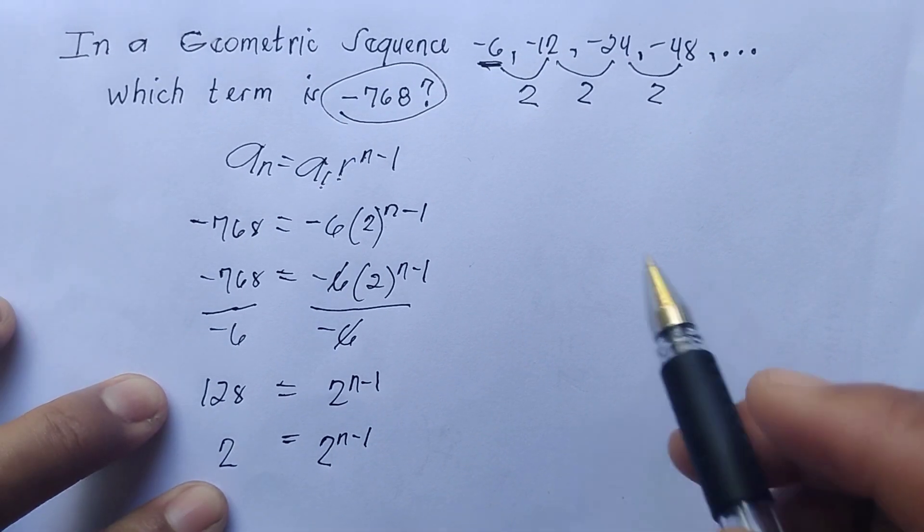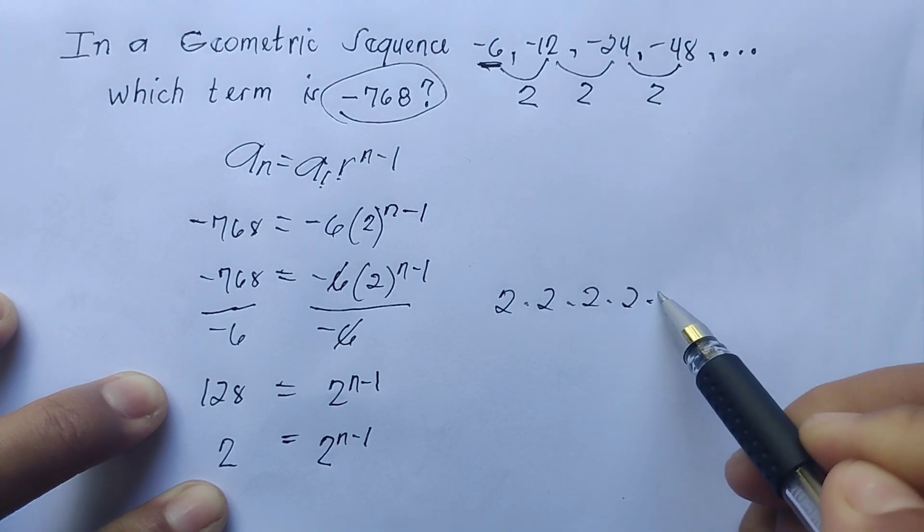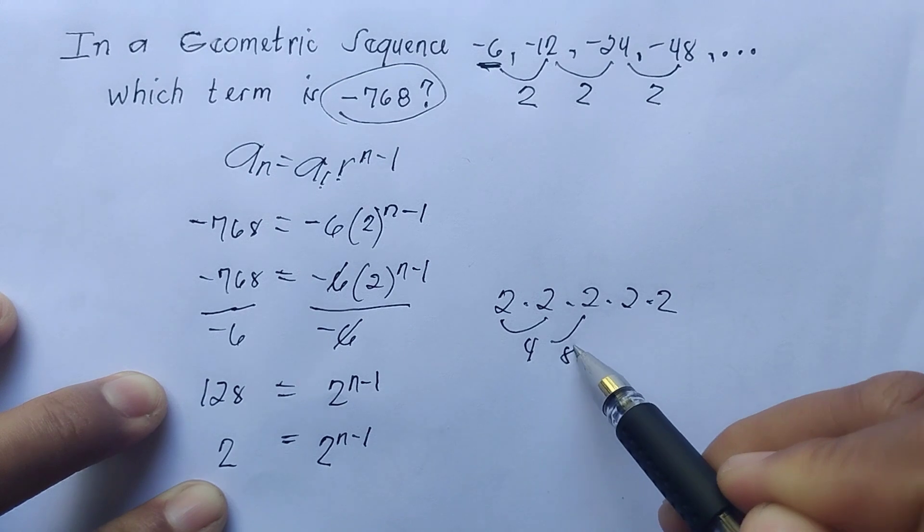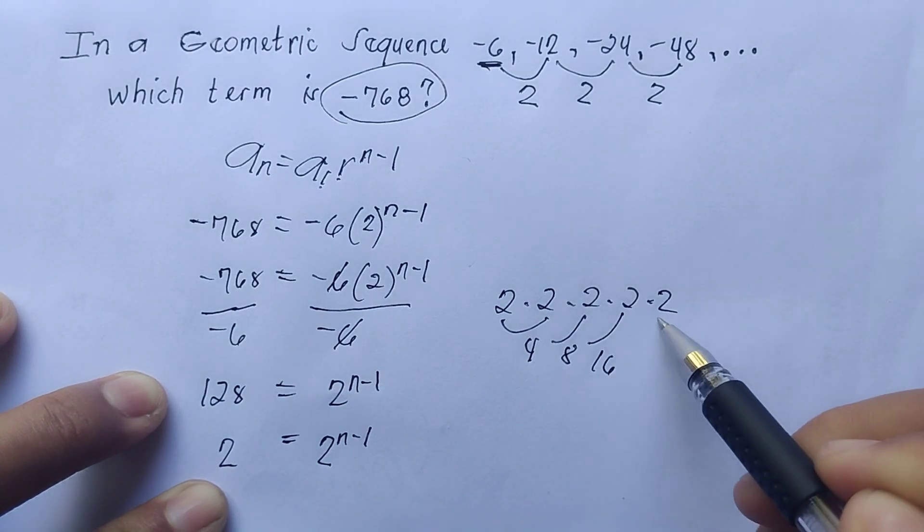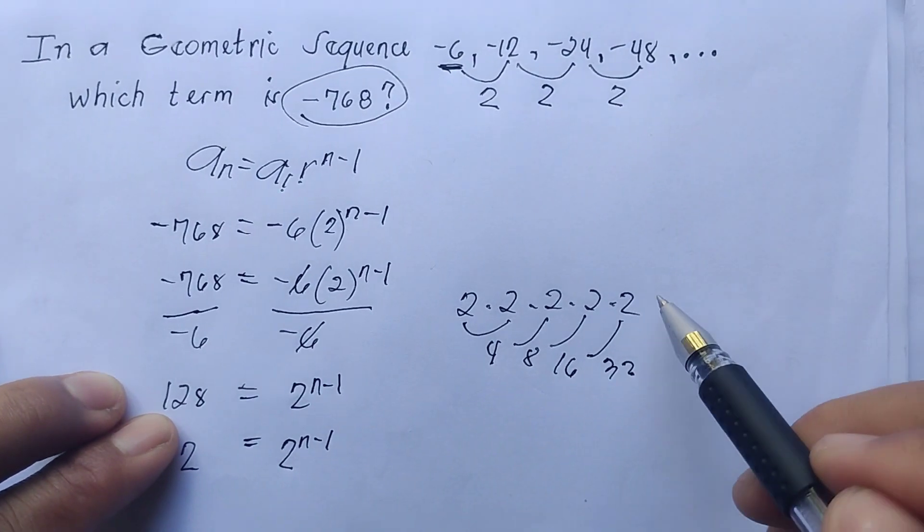So we'll start: 2 times 2 we got 4, times 2 is 8, times 2 is 16, times 2 is 32. It hasn't reached 128 yet, we need to continue.